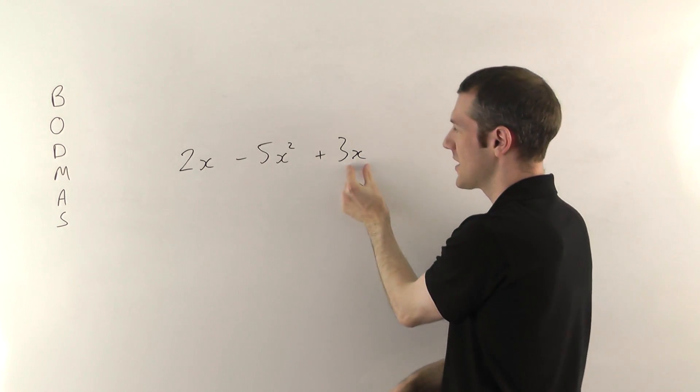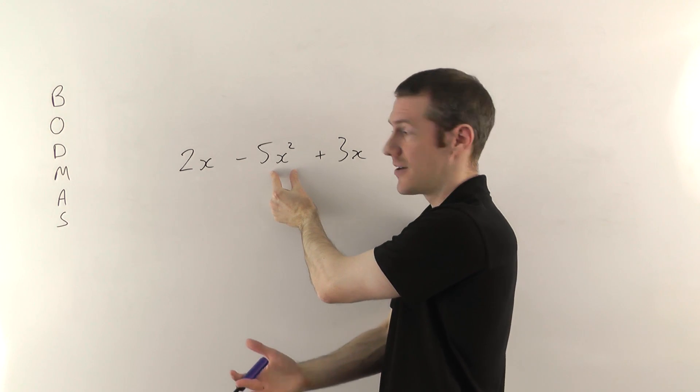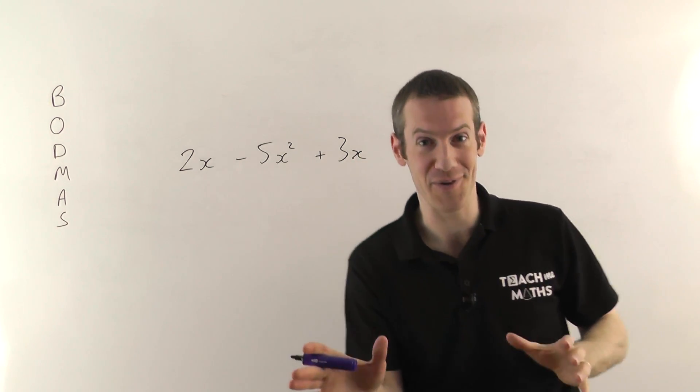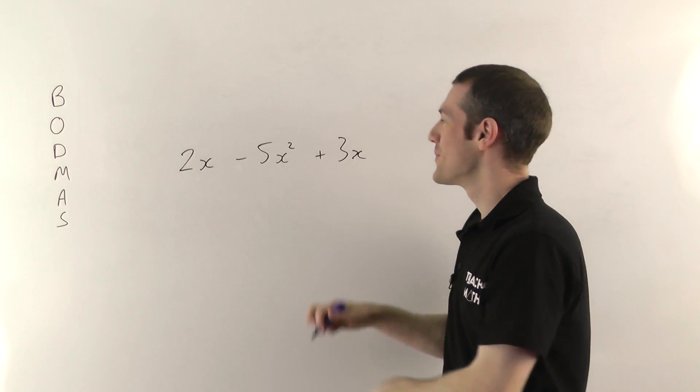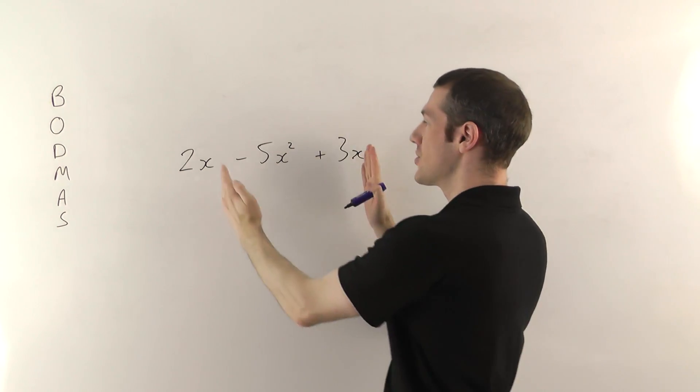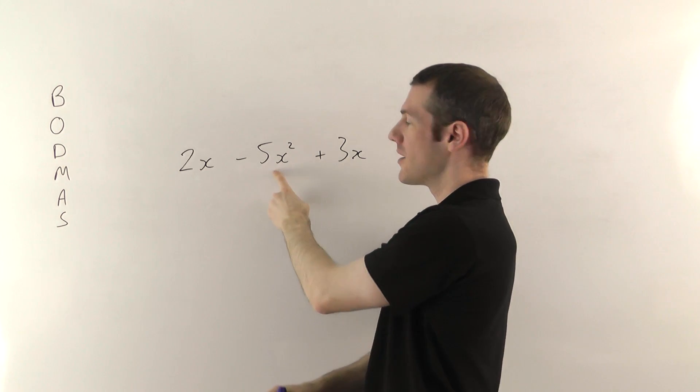So you treat the terms as separate, but then you have to identify what kind of term it is. This is an x term, this is an x term, but this is an x squared term. And we can do things with the ones that match. Don't worry about what you do with them. I'll do that in the next video. But the point is that that's why we want to keep them separate in our head, because you can combine these together, whereas you can't combine them with that one.